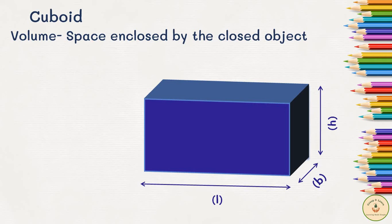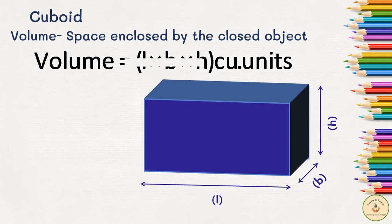For the cuboid, there are three dimensions: length, breadth, and height. When we multiply all these three dimensions, we obtain the space occupied by this particular cuboid. So volume of the cuboid is length into breadth into height (l × b × h).